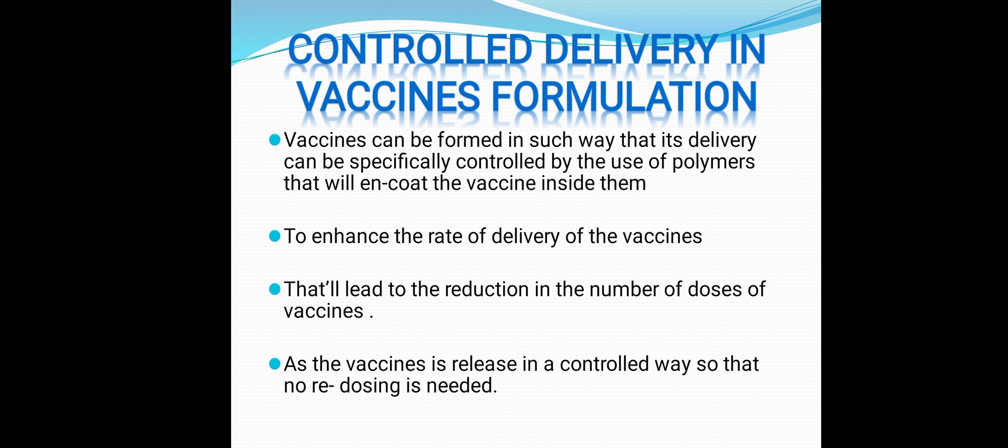Why are we using controlled delivery in vaccine formulation? Vaccines can be formulated so that delivery is specifically controlled using polymers that encode the vaccine inside. We use controlled delivery to enhance the rate of vaccine delivery, reduce the need for redosing multiple times, and reduce the number of doses required, since the vaccine is released in a controlled way.